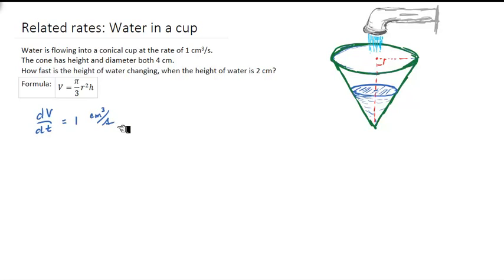We also know that the cone has a height and a diameter that are both 4. So this radius is 2, because the diameter is 4, and the height is 4. Those are both in centimeters.